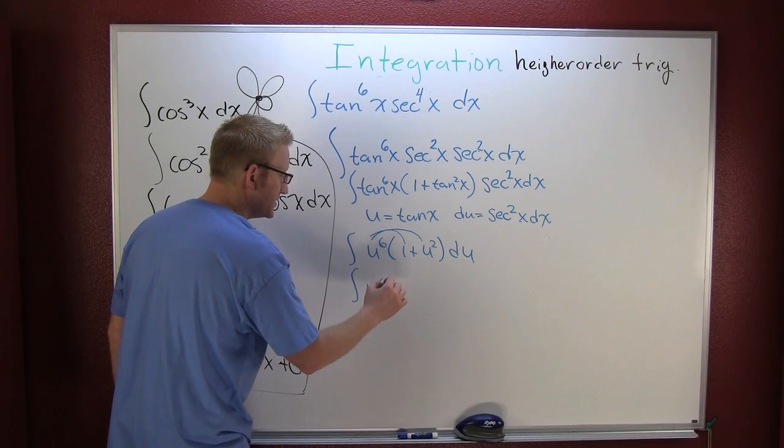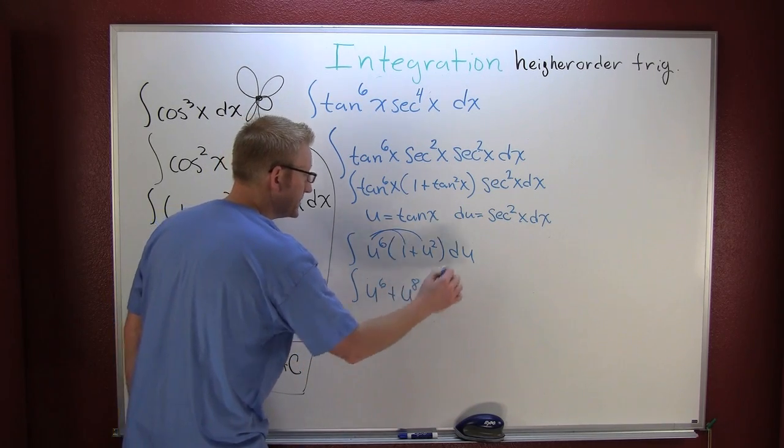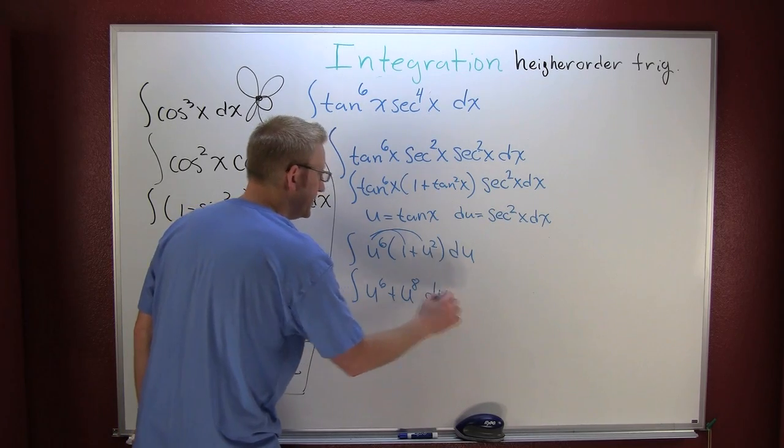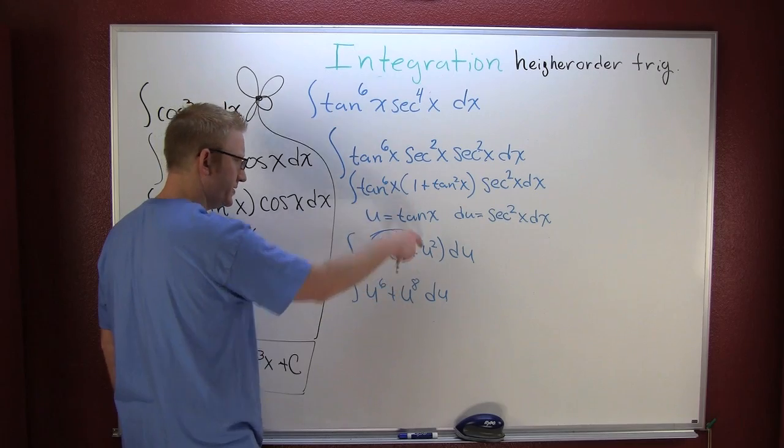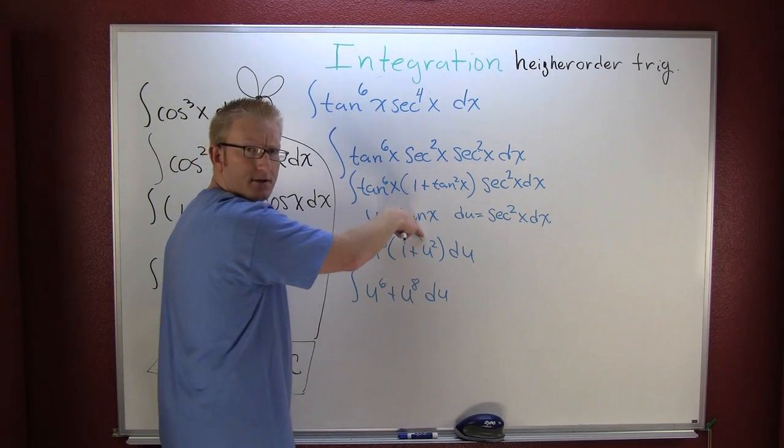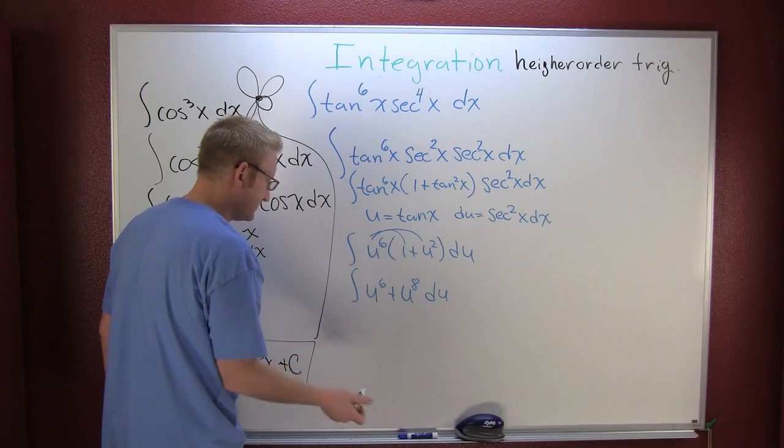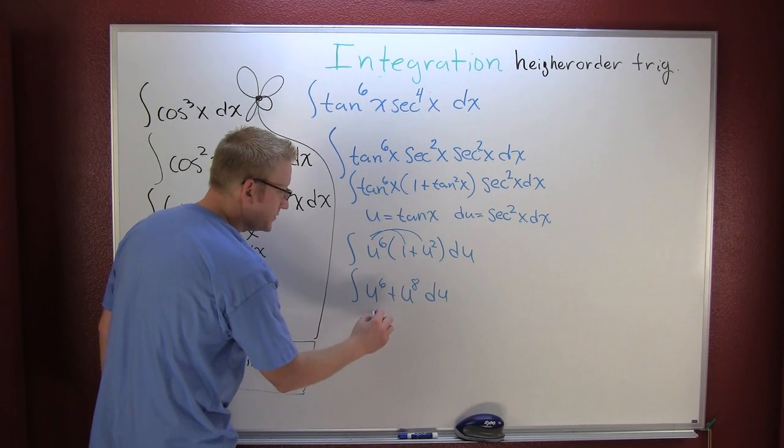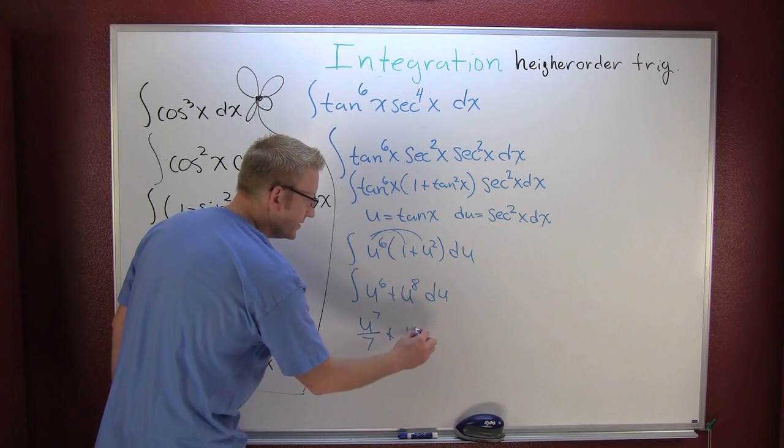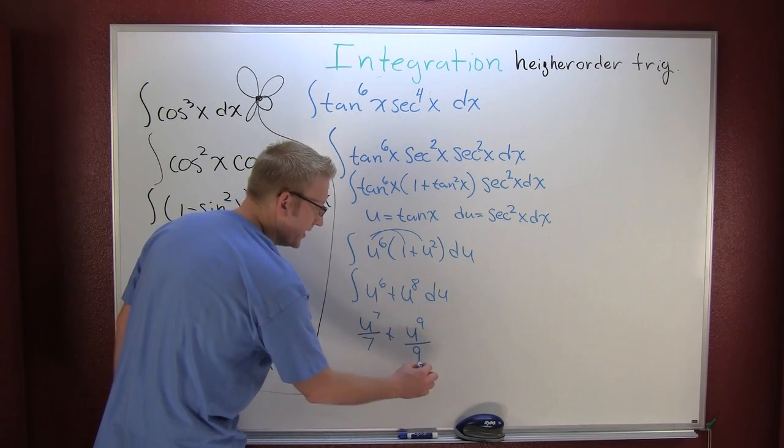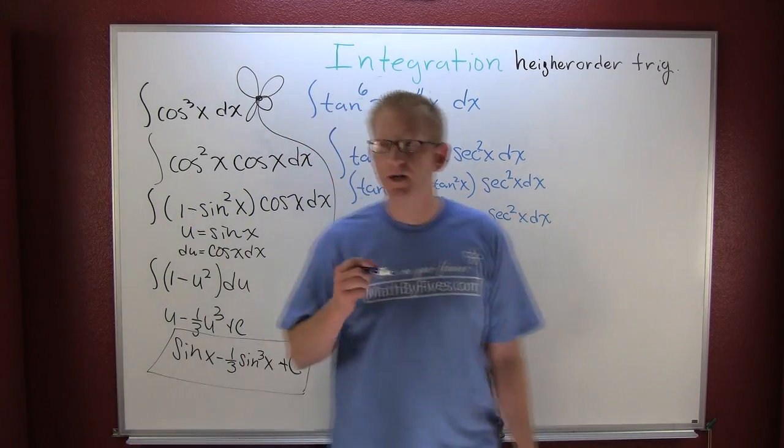U to the sixth plus u to the eighth. Great. Why? Because if they have the same base and you're multiplying, what you do to their exponents: add them. Yeah, I add them. And then this turns out to be u to the seventh over seven plus u to the ninth over nine plus my c, the constant of integration.